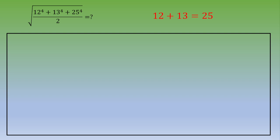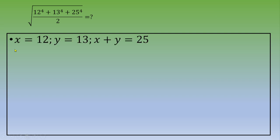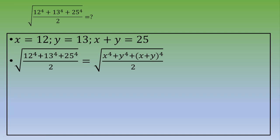So let's do a change of variables: x equals 12, y equals 13, and 25 can be written as 12 plus 13, i.e., x plus y. If we plug this into the expression, we obtain the square root of x to the power 4 plus y to the power 4 plus (x plus y) to the power 4, all divided by 2.